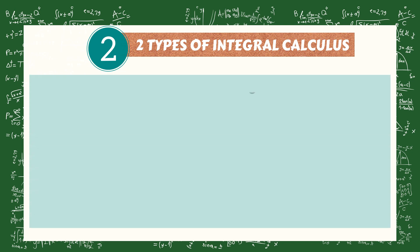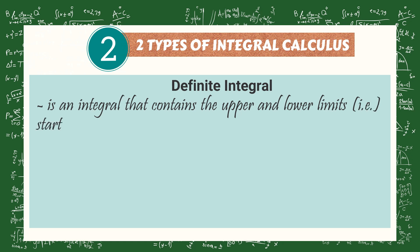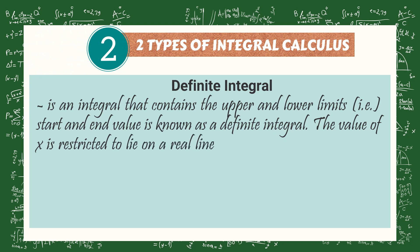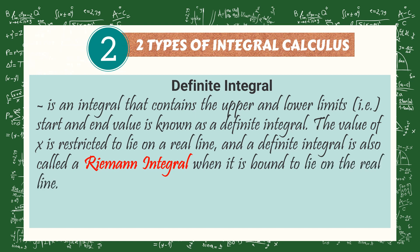The first one is definite integral. When we say definite integral, it is an integral that contains the upper and lower limits. The start and end value is known as a definite integral. The value of x is restricted to lie on a real line. A definite integral is also called a Riemann integral when it is bound to lie on the real line.